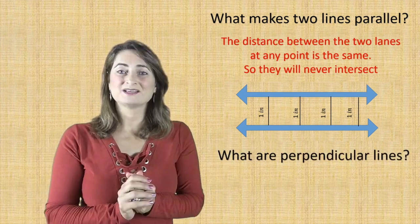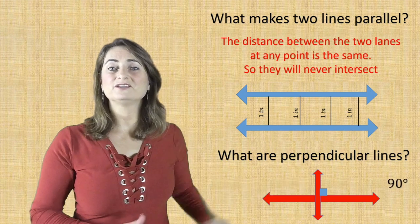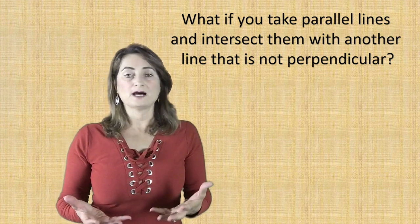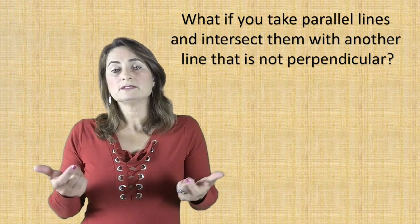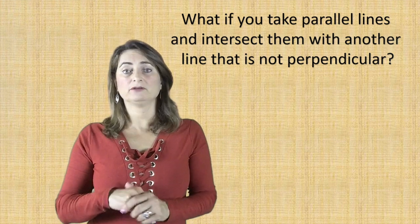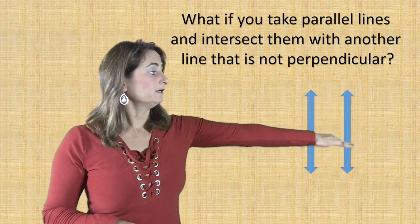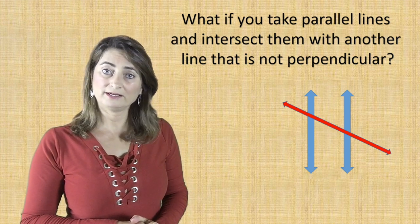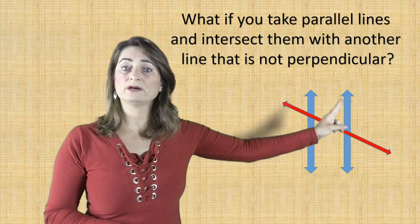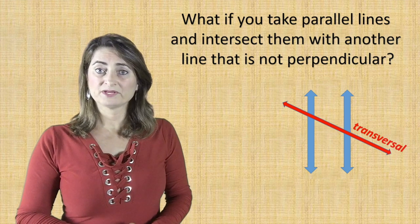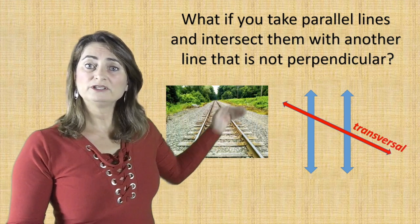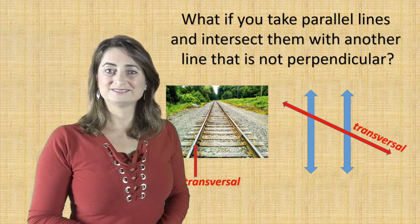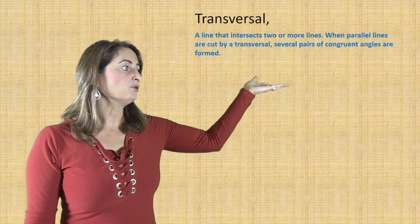What are perpendicular lines? Perpendicular lines cross at a 90-degree angle. Now what if you take parallel lines and intersect them with another line that is not perpendicular? If I use perpendicular lines, that means I created 90-degree angles, and I do not want to create 90-degree angles. So here are two lines cut by another line that is not perpendicular, to create different angles other than 90 degrees. This line that crosses or cuts the two parallel lines is called a transversal. For example, look at the train track again — the pieces of wood are parallel lines, but that piece of metal that connects all these pieces of wood is called a transversal. So a transversal is a line that intersects two or more lines.